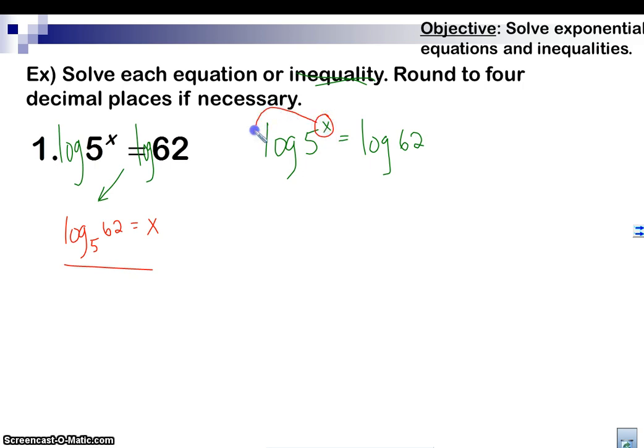We're going to log both sides and bring the power in front. x log 5 equals log 62. And then we're going to divide this log. See, this is an x here. We want to divide this whole thing. This is a whole thing. This is a whole number itself. I can put that in the calculator. So, we're going to divide both sides by log 5.